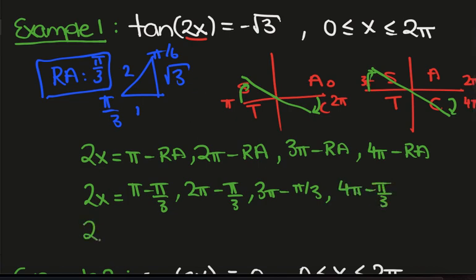So if we simplify this we get 2x is 2 pi on 3, 5 pi on 3, 8 pi on 3 and 11 pi on 3.